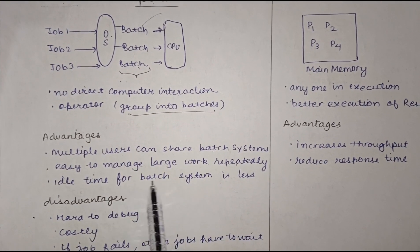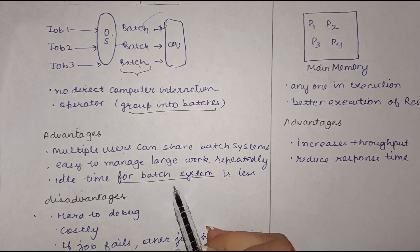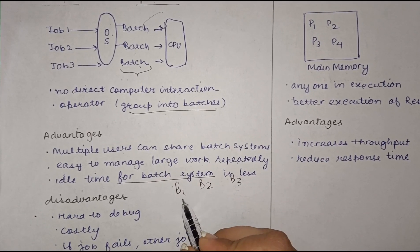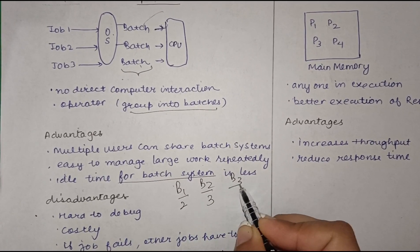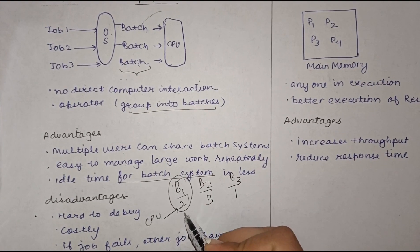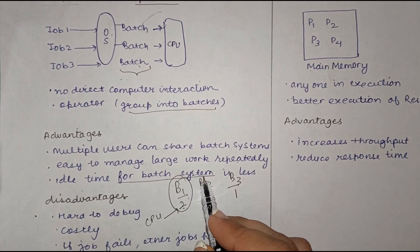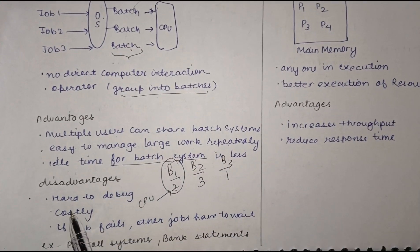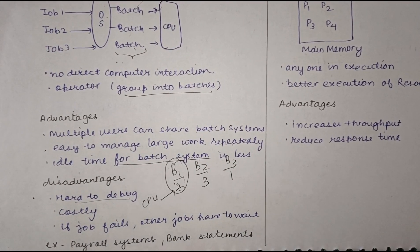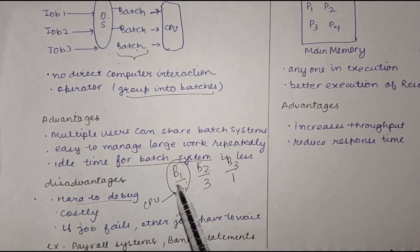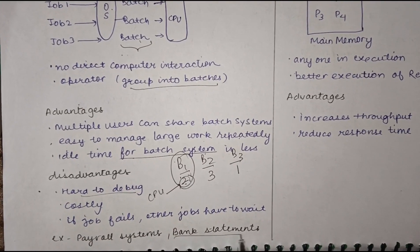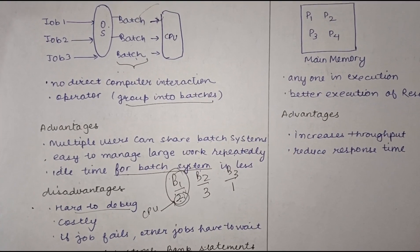The idle time for the batch system is less — for example, if we have three batches with two, three, and one jobs respectively, the CPU's idle time is reduced. Disadvantages are that it is hard to debug since we cannot easily identify which job or batch has a problem, it is costly, and if one job fails the others must wait for it to be corrected. Batch OS is used in banking and payroll systems.